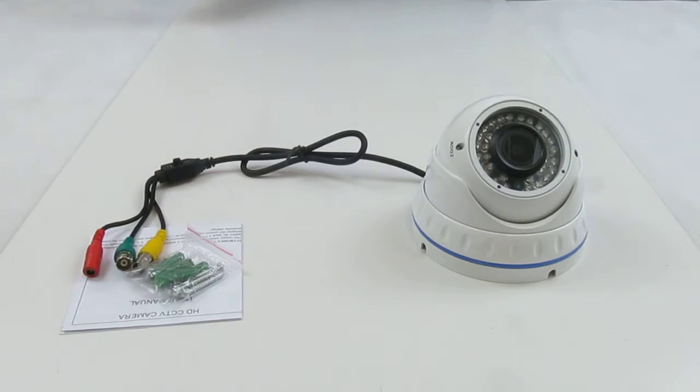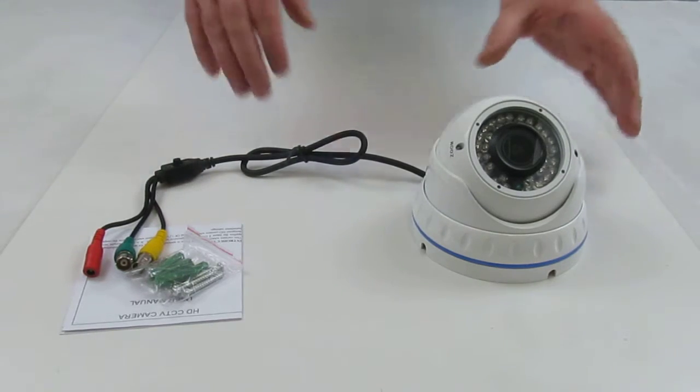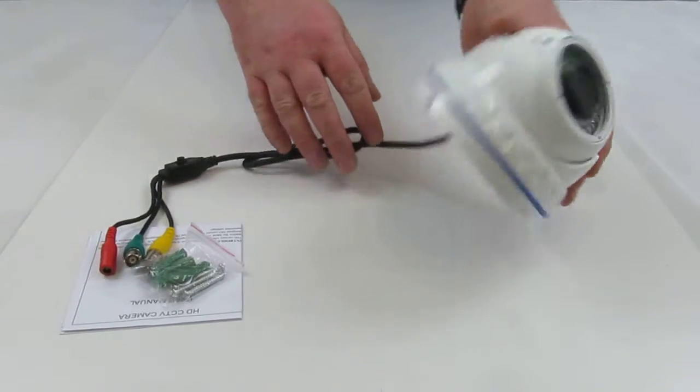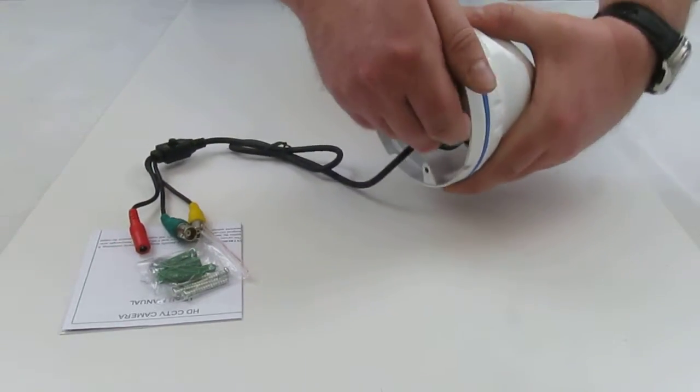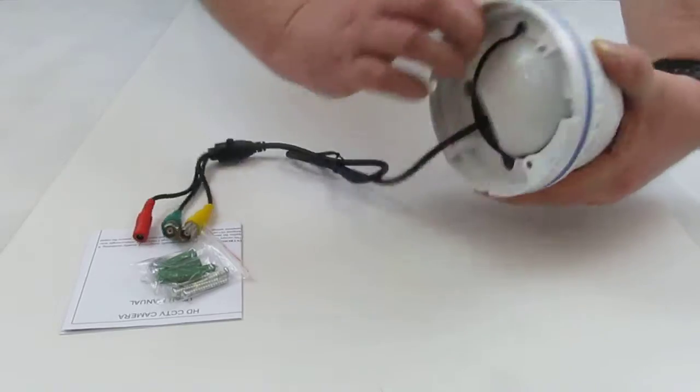With regards to installing the camera, the camera can be installed on a wall or a ceiling. It's simply done by removing the base. This unscrews from the camera like so.